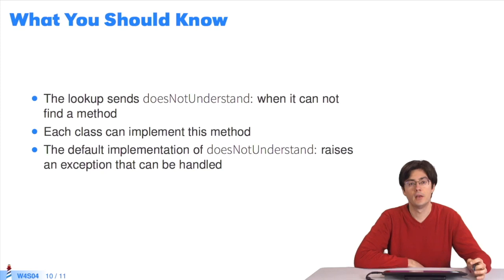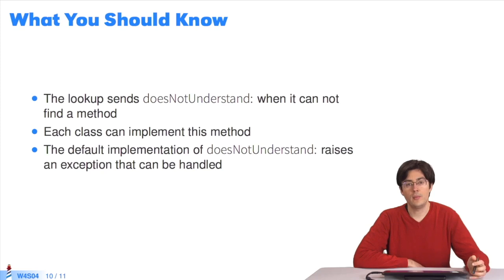What you should know: when the lookup algorithm does not find a method to match a message, a doesNotUnderstand message is sent to the initial receiver, with the first message as a parameter. Each class can implement this method. The default implementation in the Object class will be executed. This default implementation raises an exception called MessageNotUnderstood.